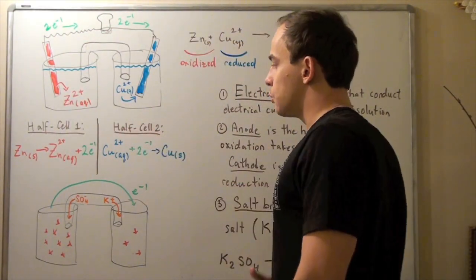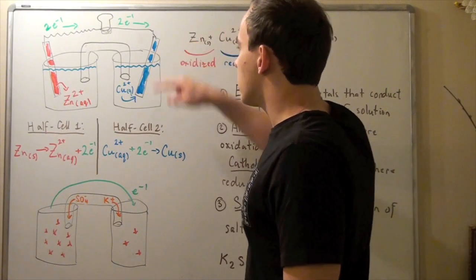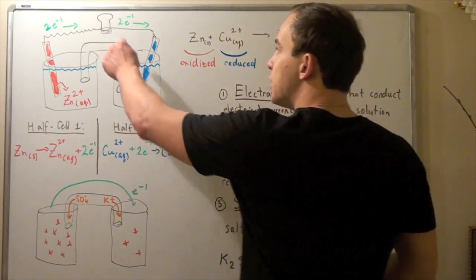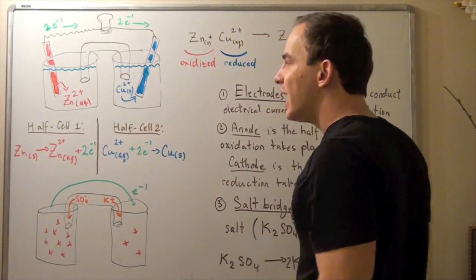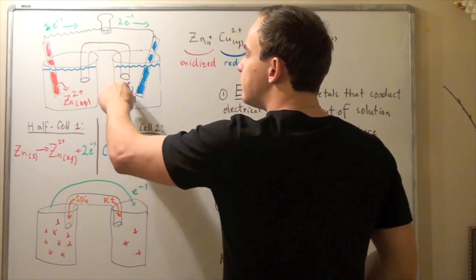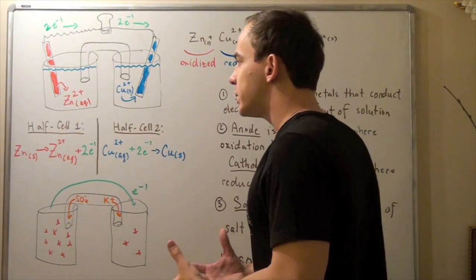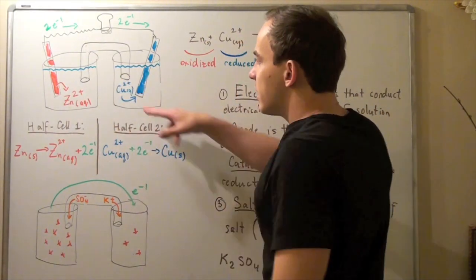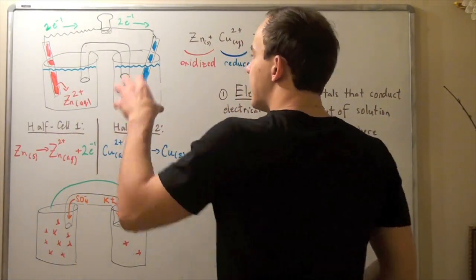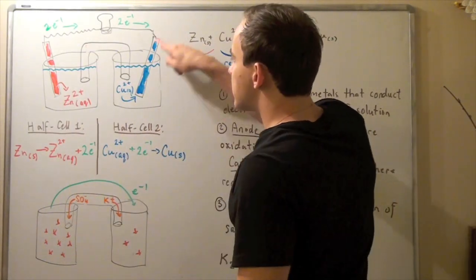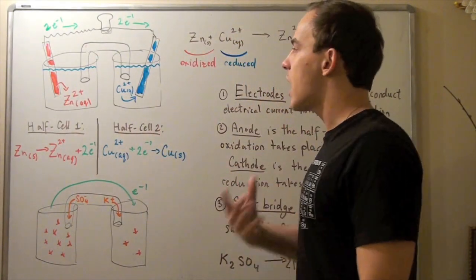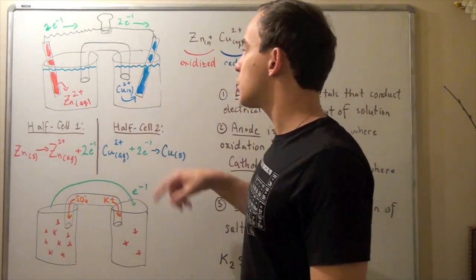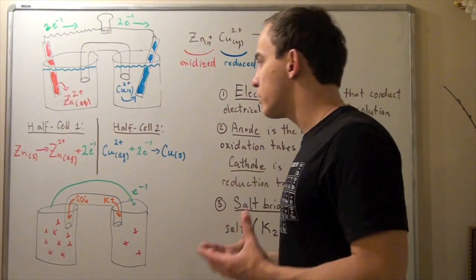In half cell number two, this metal bar corresponds to our copper solid. These two electrons combine with the copper ion found within the aqueous solution to form our copper solid. The copper ions move from the solution into this metal bar, so our concentration of copper ions found in solution decreases, and the positive charge found in this solution also decreases.